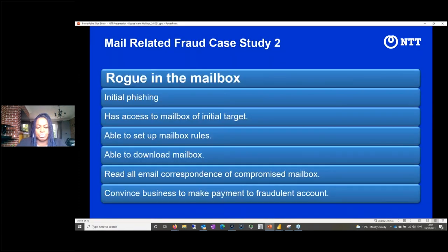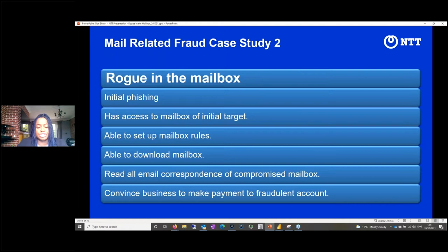The second case study, which I find very interesting and quite offensive, is the actual 'rogue in the mailbox' where the attacker is resident — they have access to the mailbox of one or multiple users. Initially, just like the previous case, it would start from phishing. Once they get access to the mailbox, they are able to do a lot of things: change mailbox rules, download the mailbox, read emails, send emails on behalf of the customer, and convince partners and clients to change account numbers to commit fraud.